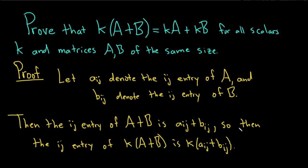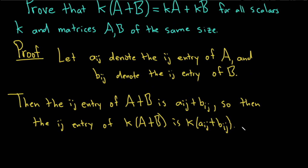All right, so now let's do the same thing with the other side just to see what we have. The ij entry of kA, well that's just going to be k times the ij entry of A. So that's going to be kaij.